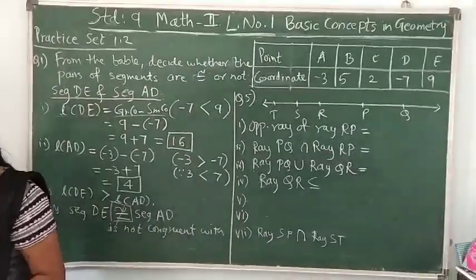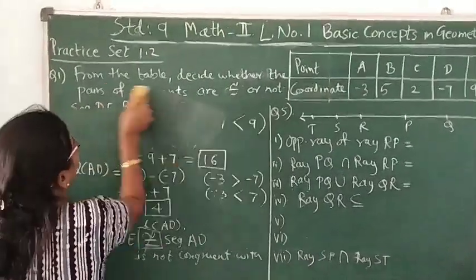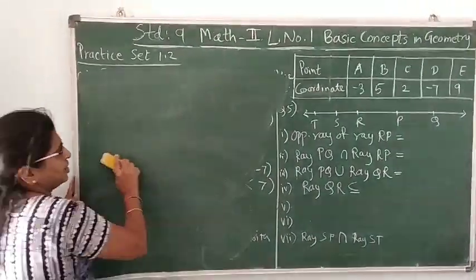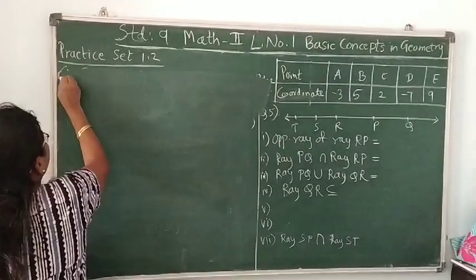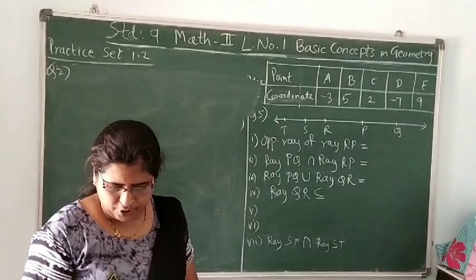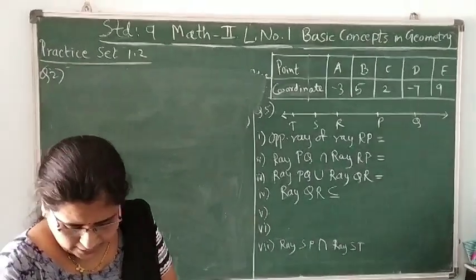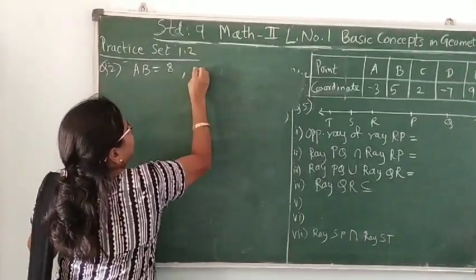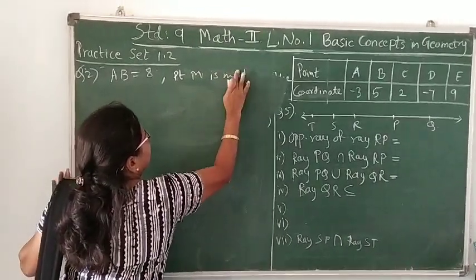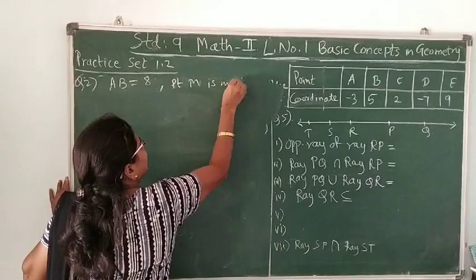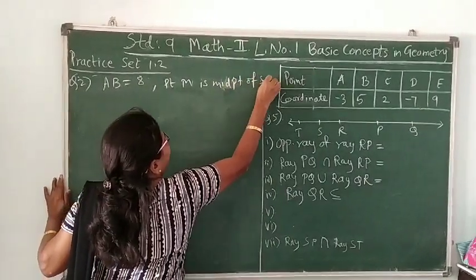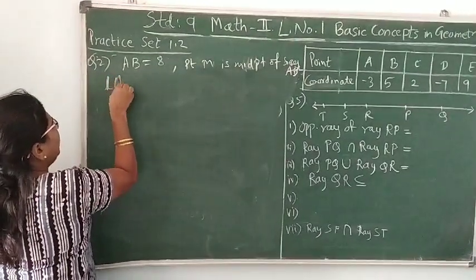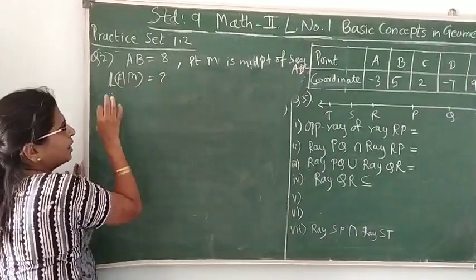Now question number 2, 3, 4, I will tell you quickly how to solve. I am not going to write it on the board. They are very easy to understand. I just want to show you the presentation part. In question number 2, it is given that point M is midpoint of segment AB, and AB is 8. What is given? Segment AB is 8 and point M is midpoint of segment AB. So what do you have to find? You have to find length AM. This is very easy, but I'm showing the presentation.